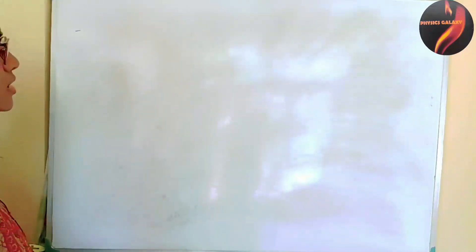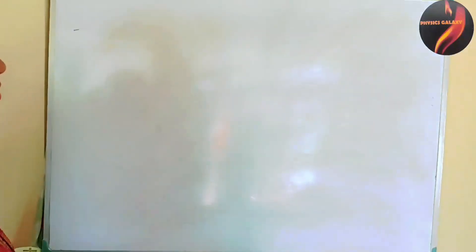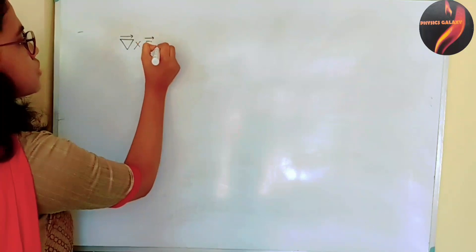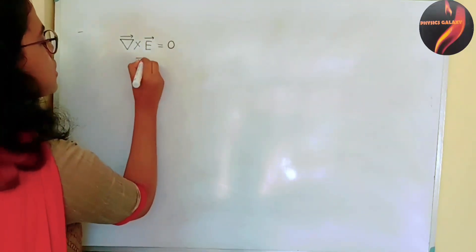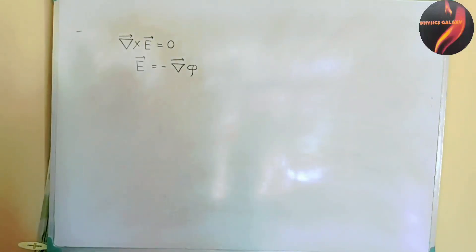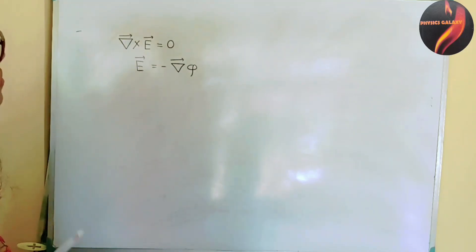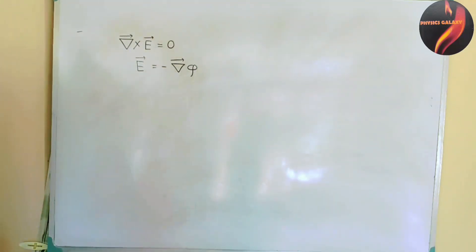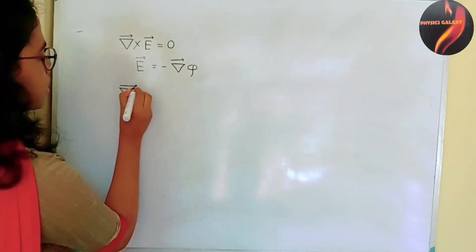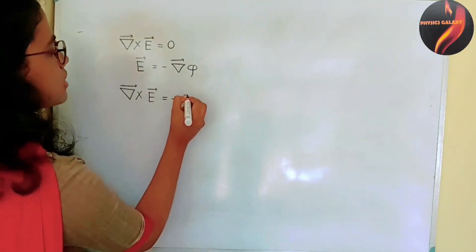The next question was from electrostatics. They asked what is the equation for curl of E, its physical significance, and what we can conclude from it. In electrostatics, curl of E equals 0, and we can conclude that E equals minus grad phi, where phi is a scalar potential. Its physical significance is that the work done is zero when a charge moves in a closed loop in an electric field. If there is a time-varying magnetic field, then curl of E equals minus del B / del t.